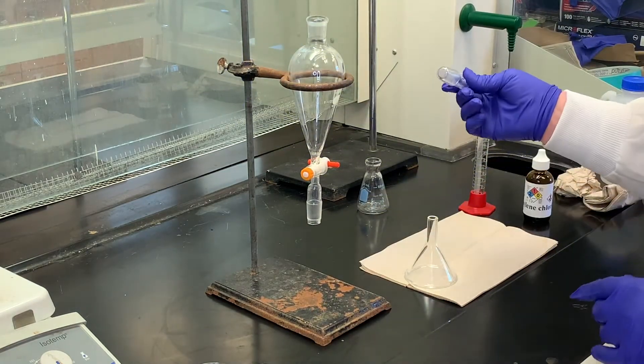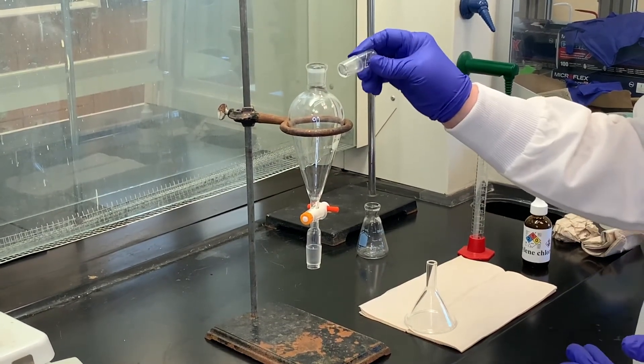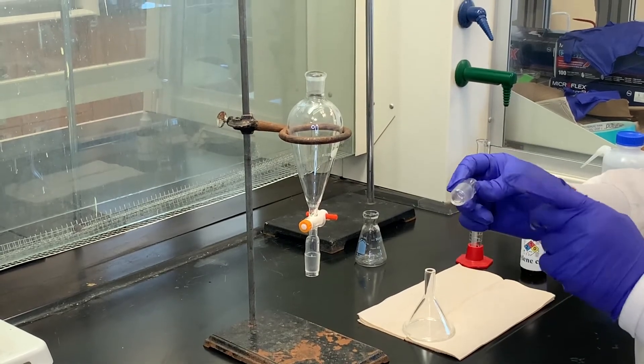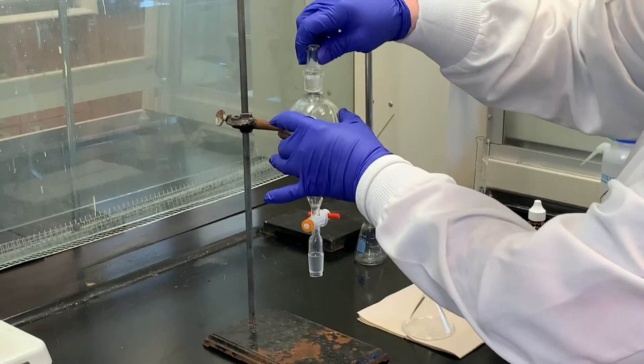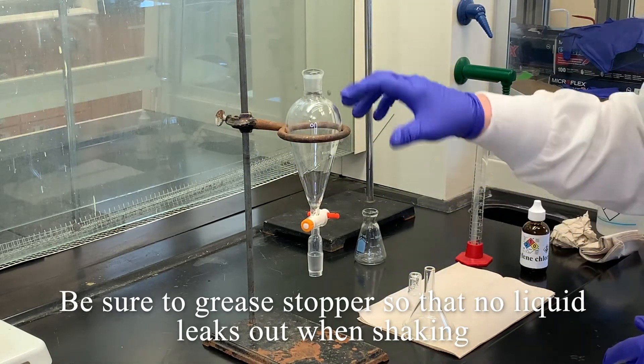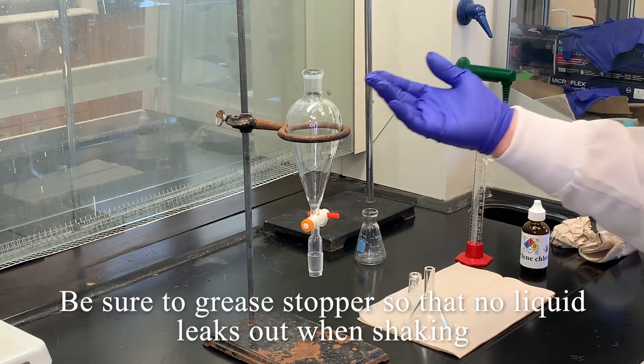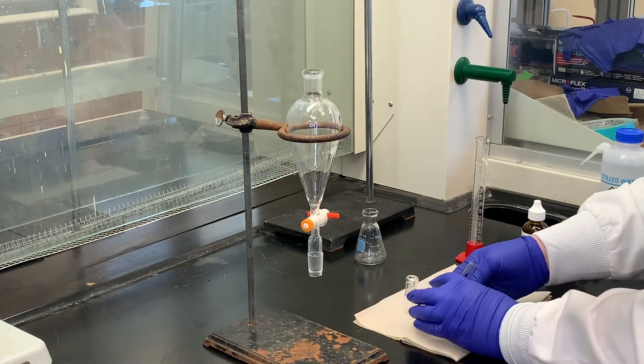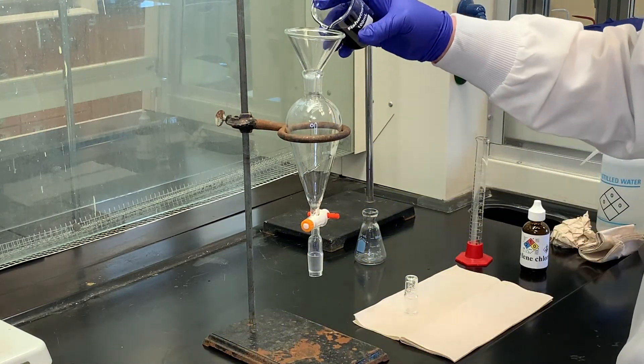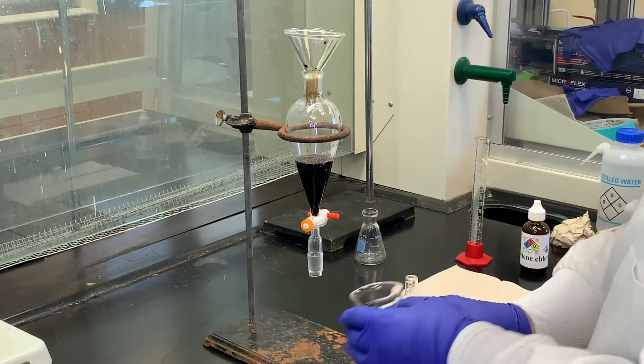The other thing about this separatory funnel is that it comes with a glass stopper. These are what they call glass joints. Anytime you use this piece of equipment, you want to make sure that you grease the stopper. When you put it in, you want to make sure you always rotate it to ensure everything is greased. The reason is, we're going to turn this separatory funnel upside down, and if there's not enough grease, you can lose some of your solution through the stopper itself. Always use a funnel. I'm going to add the solution, this mixture that has cooled down.